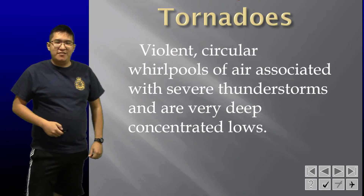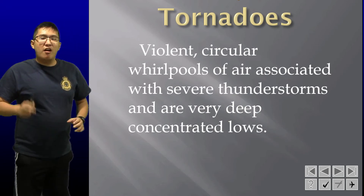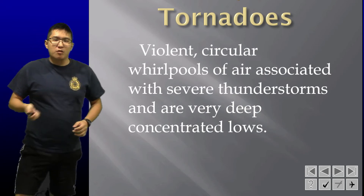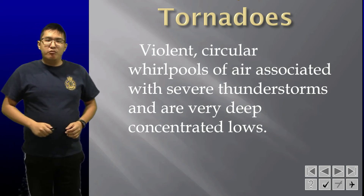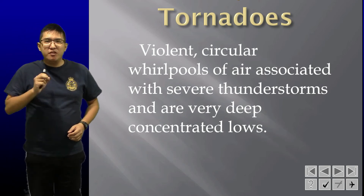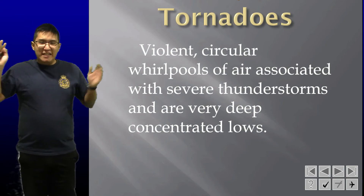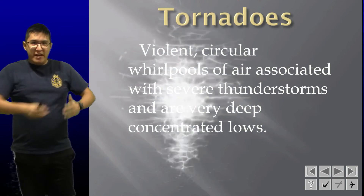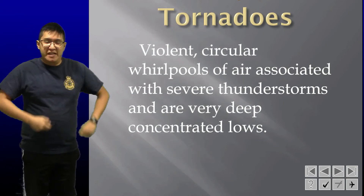Tornadoes are violent, circular whirlpools of air, usually associated with severe thunderstorms and very deep, concentrated lows — really low pressure in a very small, concentrated area.